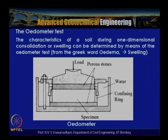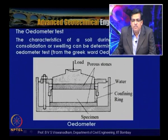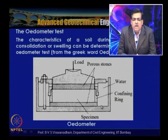The oedometer test is used to obtain the compressibility and consolidation characteristics of soil samples in either remolded or undisturbed state. The sample has porous stones at top and bottom — where pore water pressure is zero, simulating open drainage boundaries. A loading plate applies the load, and the confining ring is rigid enough to prevent lateral deformation, so only axial strain occurs.